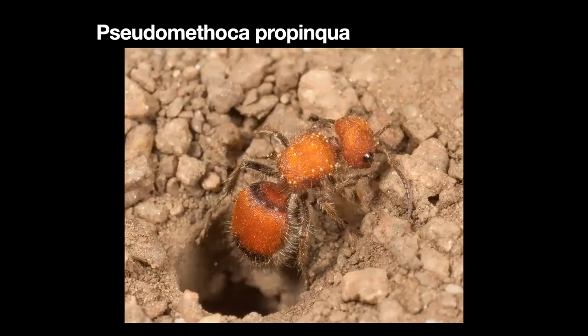Here is Pseudomethoca propinqua, a mutillid — commonly called a velvet ant. This is a female that just came out of a digger bee's nest, a cactus bee Diadasia species. They are kleptoparasitic — they lay their eggs in the cells, and then they will devour the immature cactus bee.